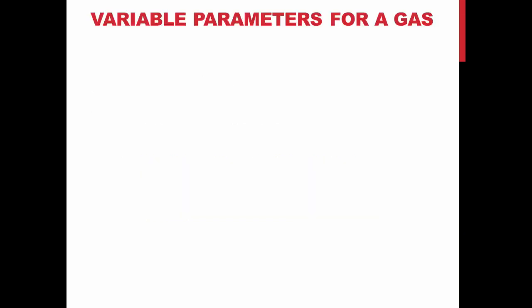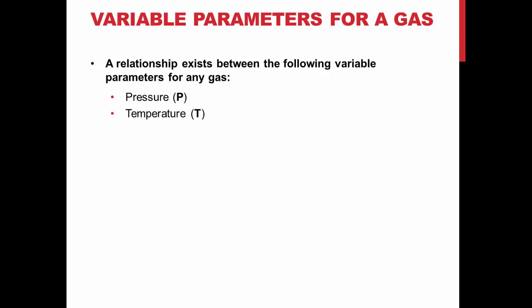The ideal gas law describes the relationship between several variables that are important to know when experimenting with gases. These are the pressure in atmospheres, the temperature in degree Kelvin, the number of moles, and the volume in liters.